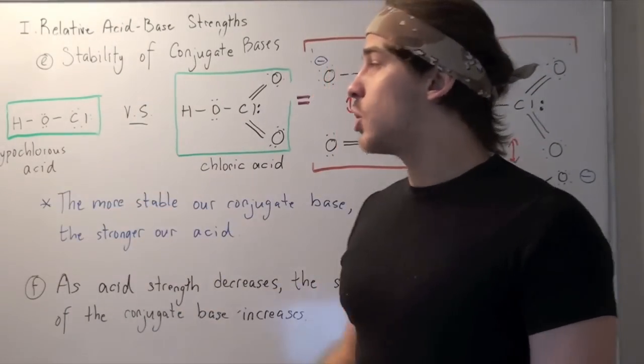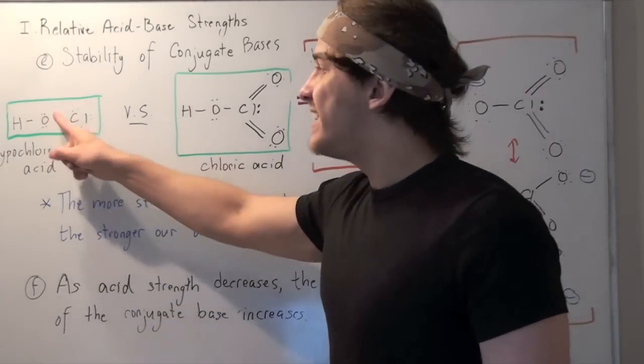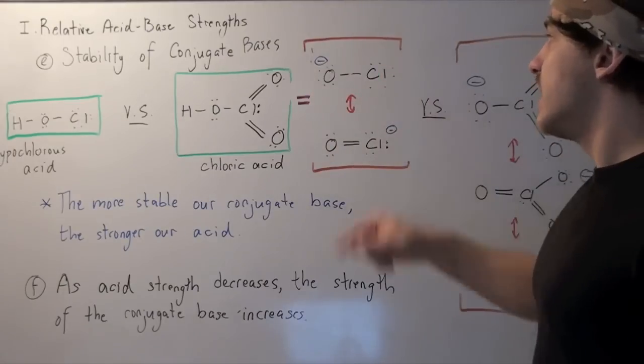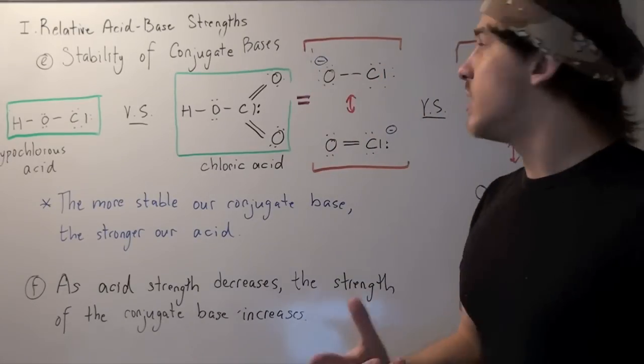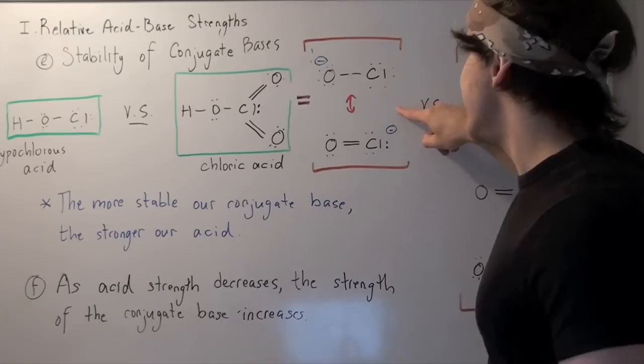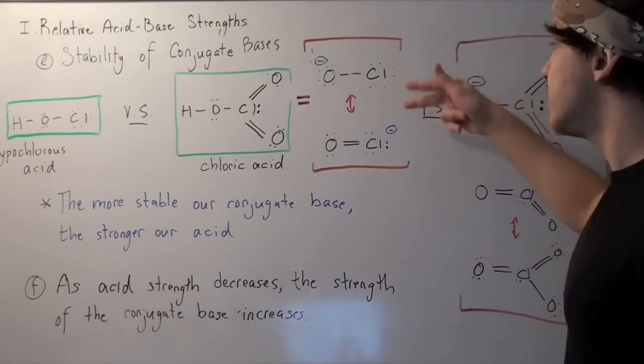This has to do with conjugate bases. Let's look at the conjugate base of hypochlorous acid. When this H dissociates, it creates a negative charge on the O atom, creating this guy here. This can be resonance stabilized by the formation of a double bond. And this creates a negative charge on the Cl atom. So we have two resonance stabilized states.